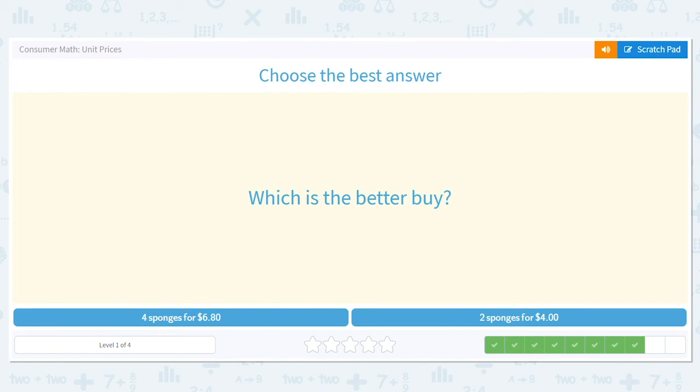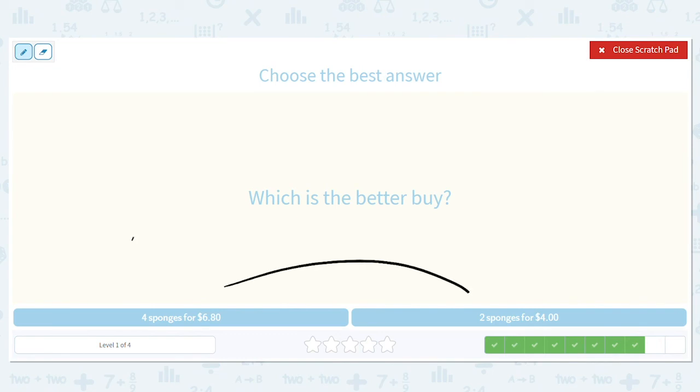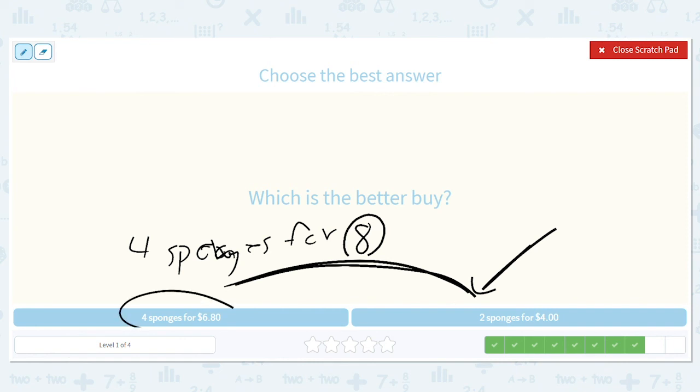What's the better buy? 4 sponges for $6.80 or 2 sponges for $4? Let's think of it another way. So 2 sponges for $4, that would, if proportionally, should give us 4 sponges for $8. Wow, so if we bought 4 sponges at this price point we'd be spending $8, but here it's saying we can get 4 sponges for $6.80. So that's clearly a better deal.